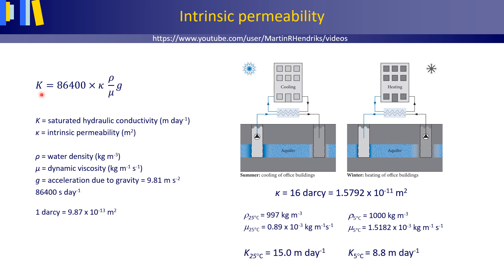K is the saturated hydraulic conductivity in meters per day. Kappa is the intrinsic permeability in square meters. Rho is the water density in kilograms per cubic meter. Mu is the dynamic viscosity in kilograms per meter and second. And g is the acceleration due to gravity, 9.81 meters per square second.